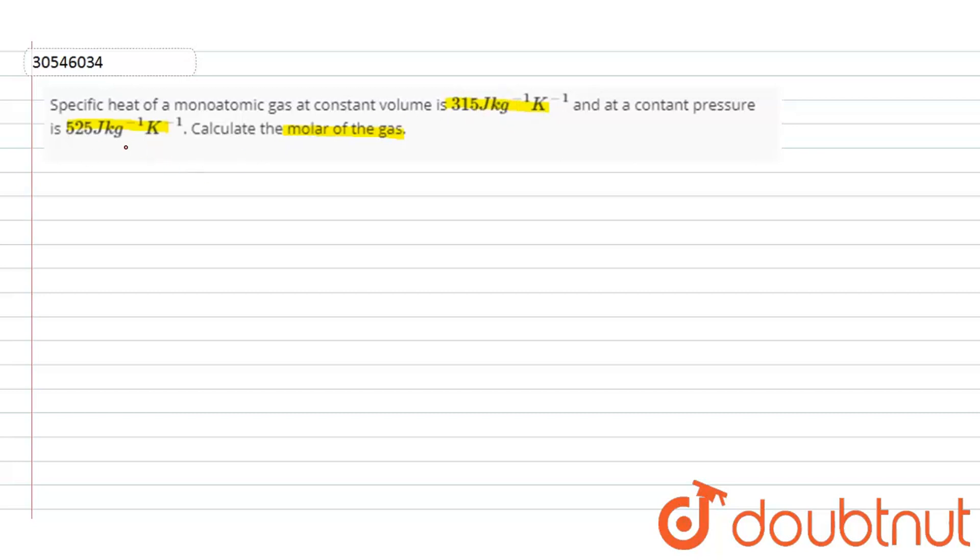So, we know that specific heat is denoted by CP. We know that specific heat equals M times 525. And we also know that CV is equal to M times 315. So, we know that M is molecular mass.